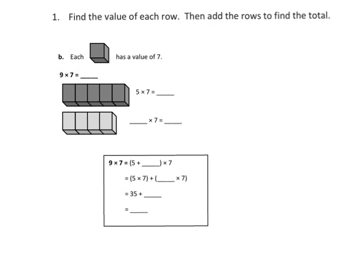All right, so we're going to find the value of each row, and then we're going to add the rows to find the total. So basically, what this problem is asking us to do is use the distributive property. The difference is they break it up for the students into 5 plus 4. I'm going to show you what I mean on the right side in a little bit.